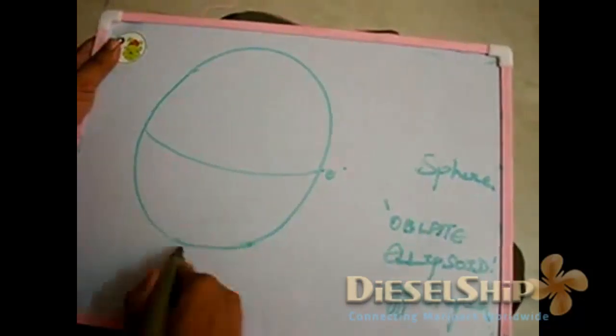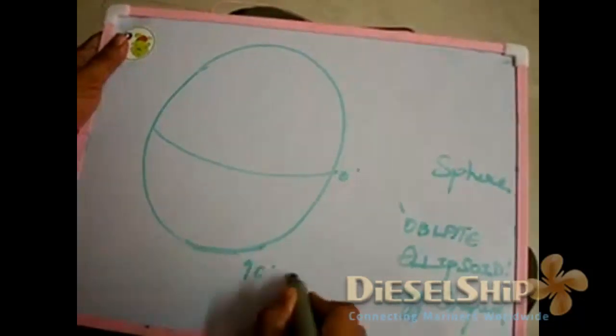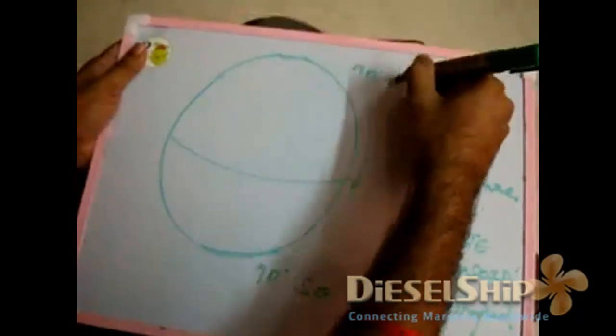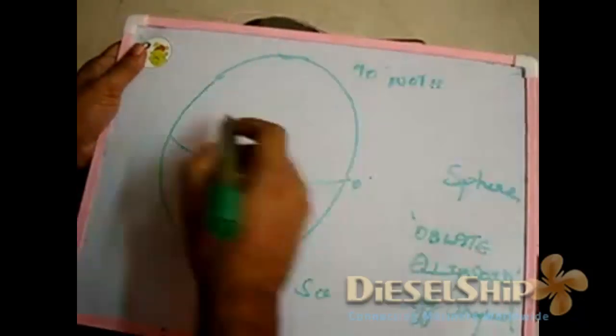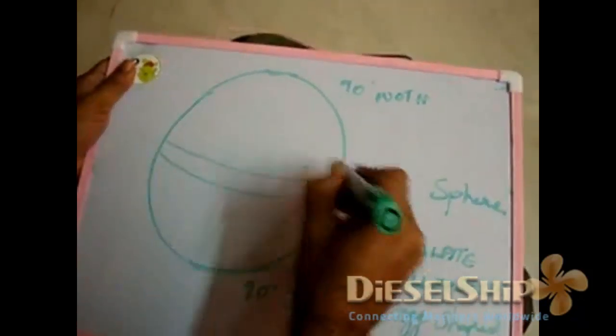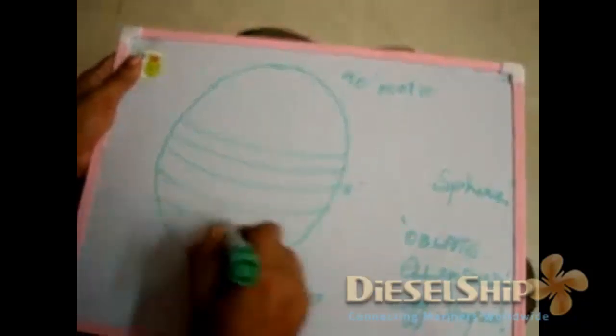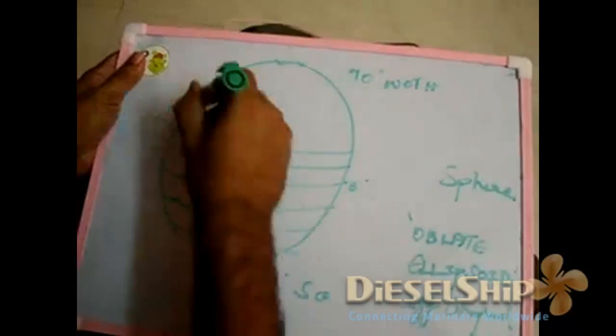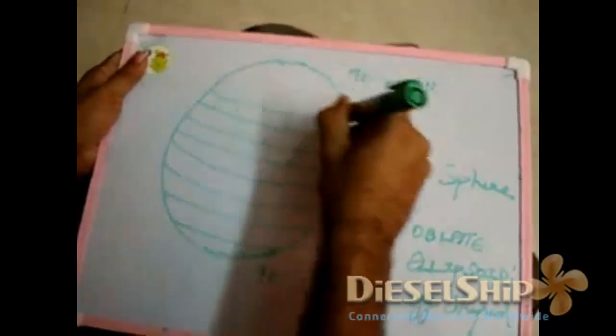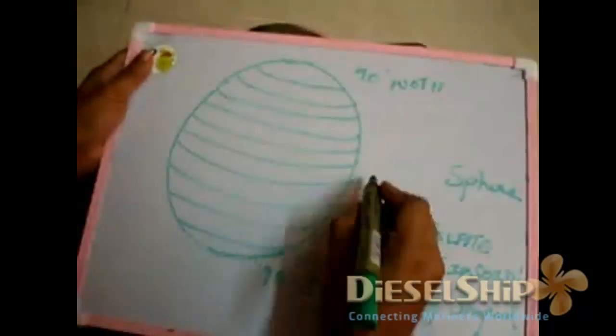And 90 degree south, 90 degree north. And various parallel lines run all around the Earth in a horizontal manner. I explained them earlier as latitudes. And I am sure that now you are getting a clear picture.